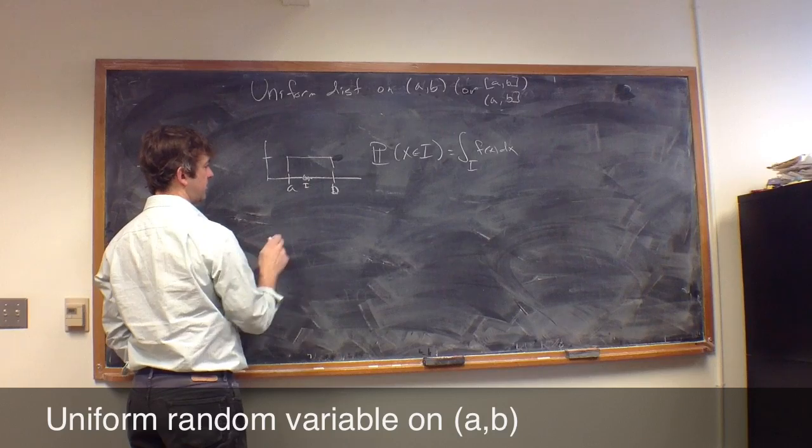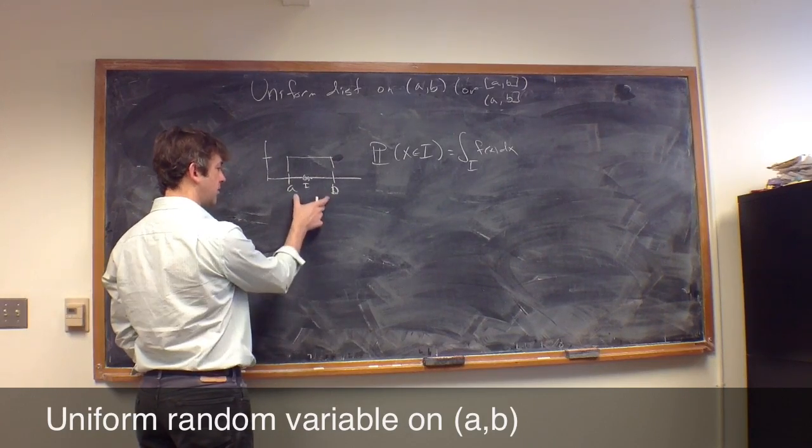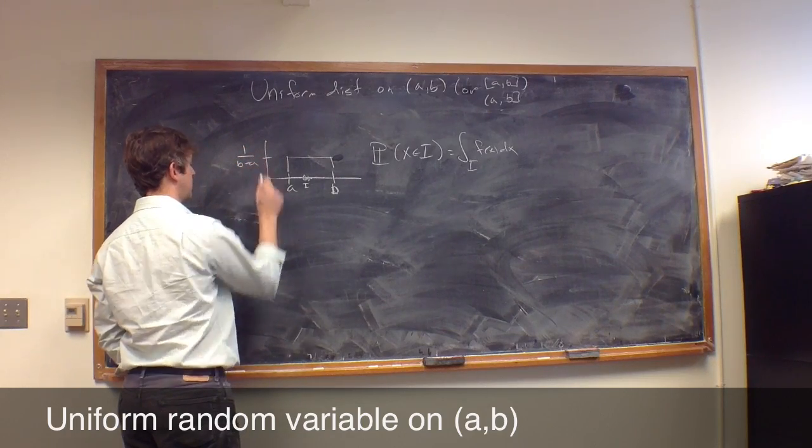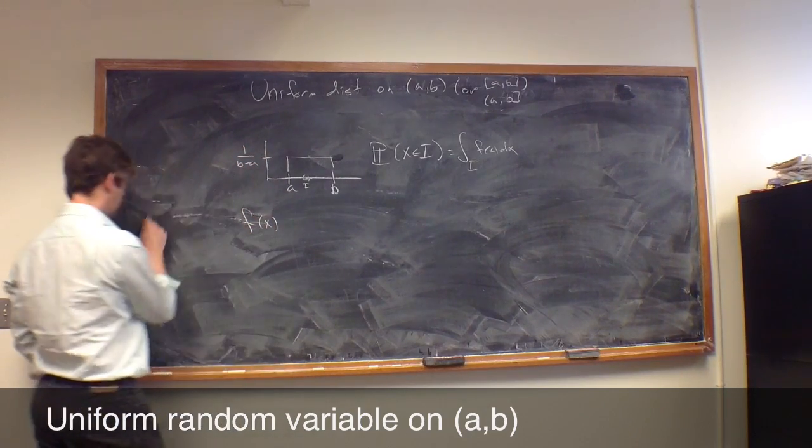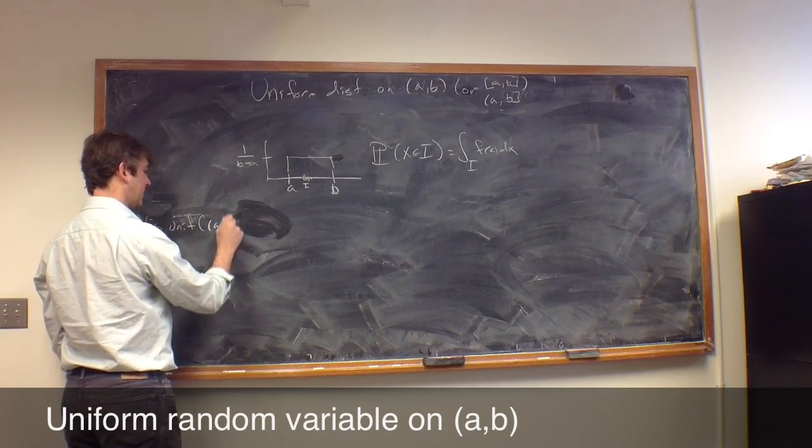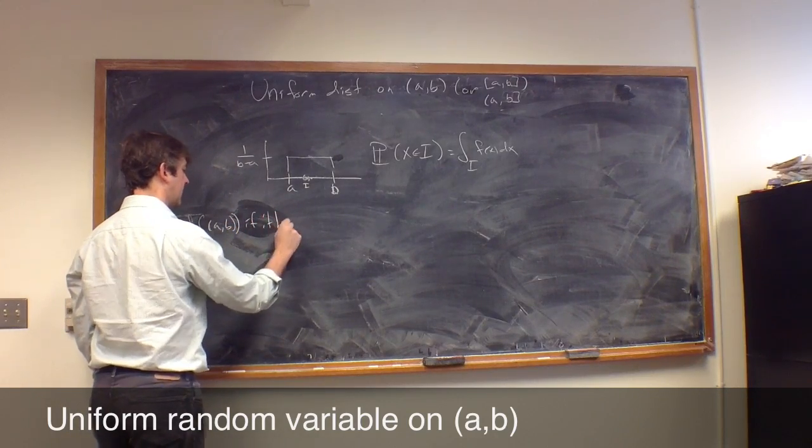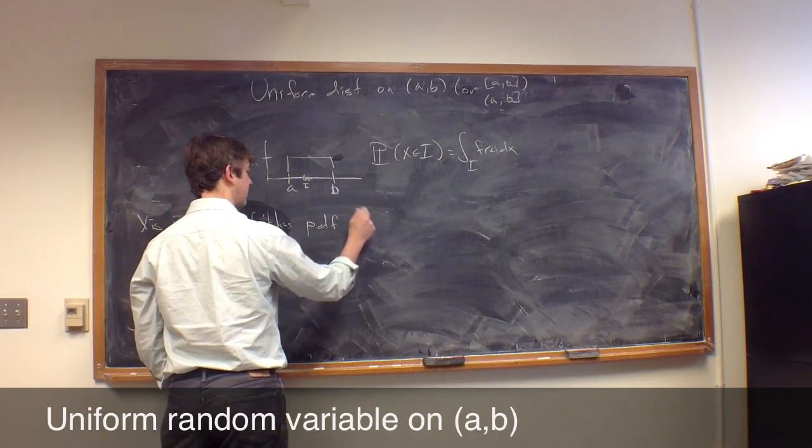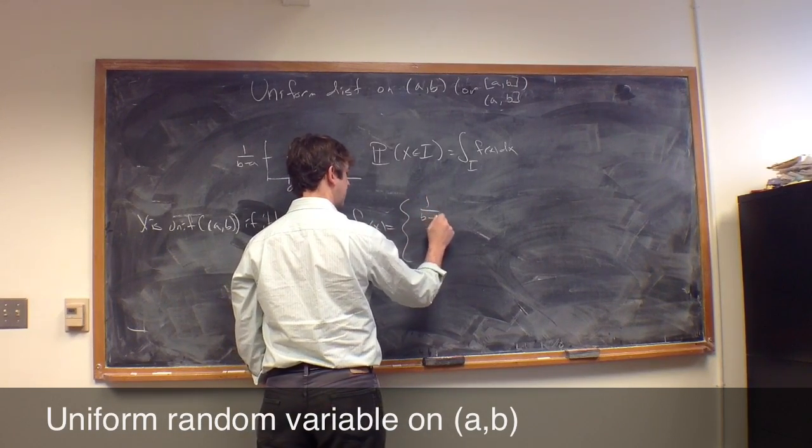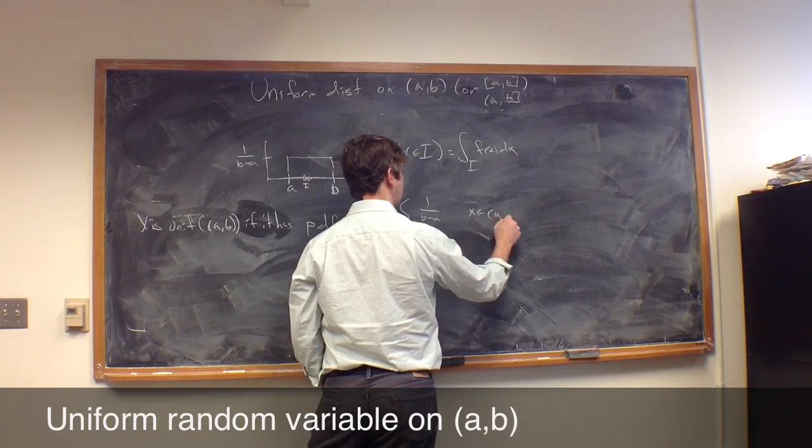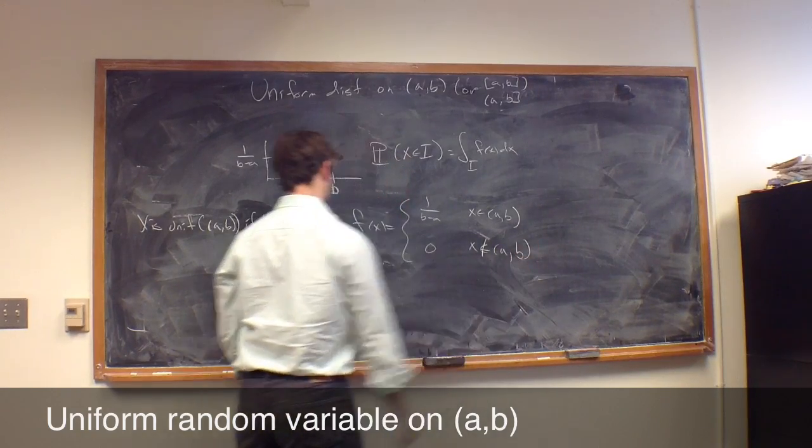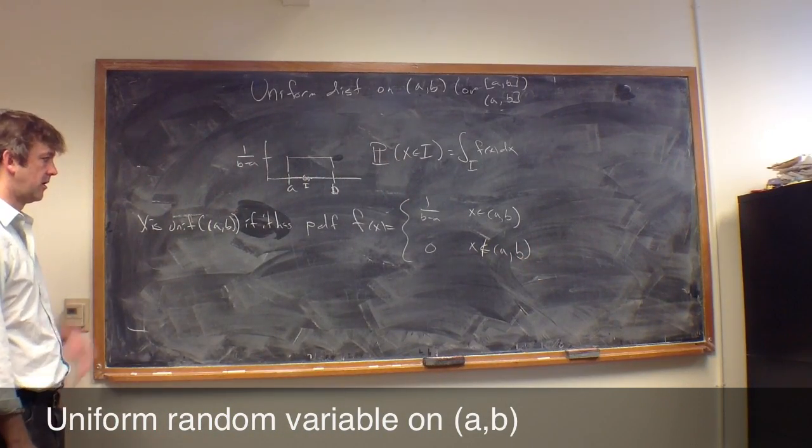Now the only thing to figure out is what's the value here. The whole thing has to integrate to 1, so if the base is b minus a, the height had better be 1 over b minus a. So x is uniform on interval (a,b) if it has PDF f(x) equal to 1/(b-a) for x in the interval (a,b), and 0 for x not in the interval (a,b). That's the PDF for the uniform distribution on the interval.